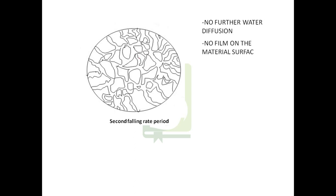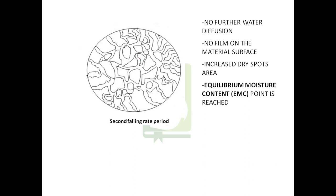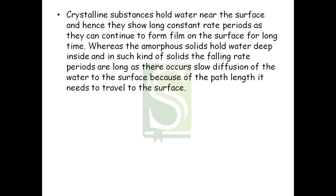The moisture content that remains in the solid even after prolonged drying is the EMC; the drying rate becomes zero beyond EMC, and drying beyond it is a waste of time and energy. In the second falling rate period, all dry spots have enlarged and there is no film remaining on the material surface, so the material reaches its equilibrium moisture content. Crystalline substances hold water near the surface and therefore show long constant rate periods. Amorphous solids hold water deep inside, so their falling rate periods are long due to the longer diffusion path the water must travel to reach the surface.